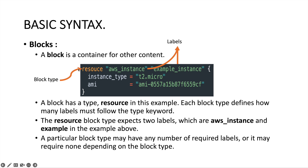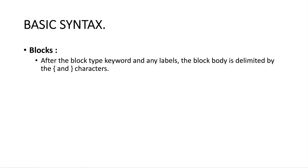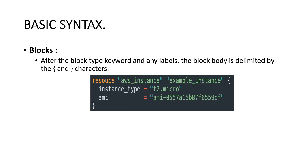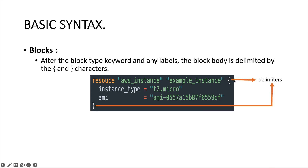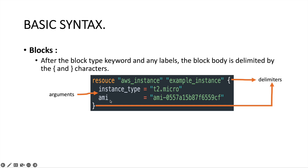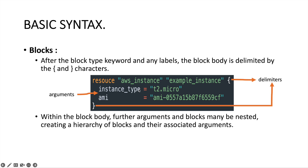Once you're done defining the block type, then comes the body — what arguments you're going to pass within the block type. Here we use curly braces as your delimiter, and inside these curly braces we give the body specifying exactly what arguments you want to pass to create the resources. Here we are passing a couple of arguments: instance_type and ami, with their respective values. Within the block body, arguments and blocks may be nested, creating a hierarchy of blocks and their associated arguments.